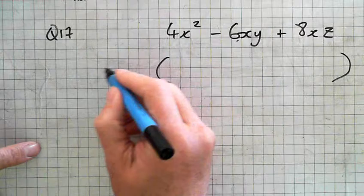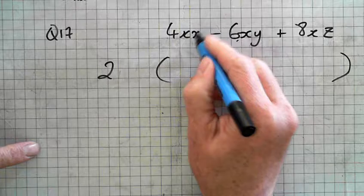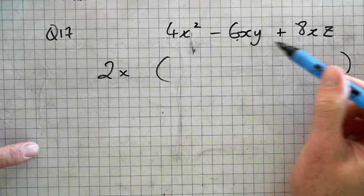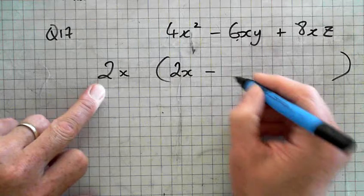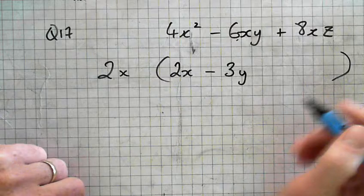Question 17. 4x squared minus 6xy plus 8xz. Alright. So, brackets again. What's the highest number to divide into 4 or 6 and 8? 2. How many x's can I take from each one? 1. I can only take 1x. 2x. Many y's. None. There's no y there. Z's? No.